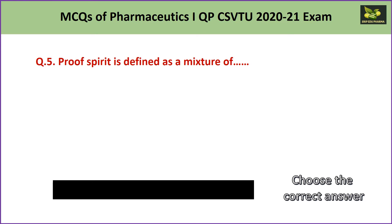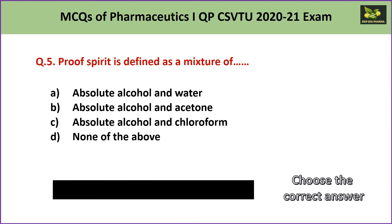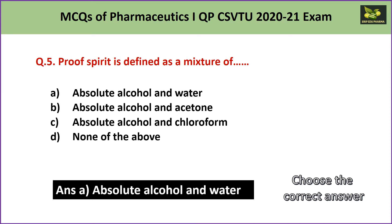Question number 5: Proof spirit is defined as a mixture of A. absolute alcohol and water, B. absolute alcohol and acetone, C. absolute alcohol and chloroform, or D. none of the above. The answer is A — absolute alcohol and water — because proof spirit is a combination of 57.1% ethyl alcohol and 42.9% water.